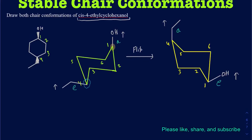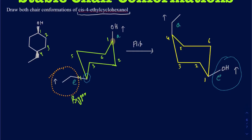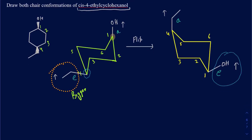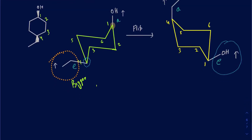In this particular case, the first conformation has the ethyl group on the equatorial, and the second conformation has the OH on the equatorial. Your ethyl group is actually bigger than your OH group. So since the ethyl is bigger, you want it on the equatorial. As a result, the first conformation is going to be more stable.